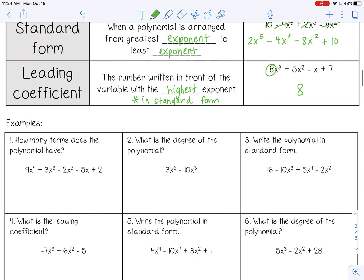Okay, so let's try some examples. Number 1, how many terms does the polynomial have? So terms are separated by addition and subtraction. So I have 1, 2, 3, 4, 5 terms.